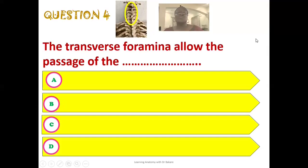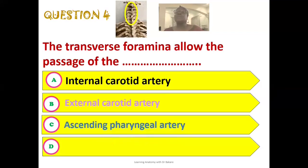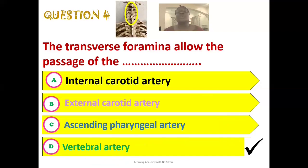The fourth question: what do the transverse foramina allow passage of? Options are: the internal carotid artery, the external carotid artery, the ascending pharyngeal artery, or the vertebral artery. The correct answer is the vertebral artery. The vertebral artery is accommodated within the transverse foramina of the transverse processes of the cervical vertebrae — it runs through these holes created on the transverse processes.